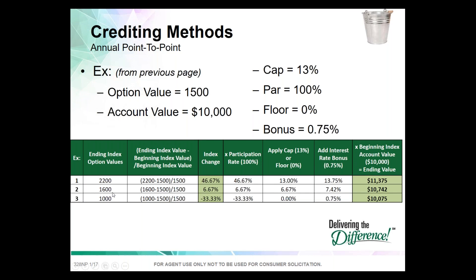In example two, the index starts at 1,500 and moves to 1,600 — up 6.67%. That's within our cap and floor, so that amount is applied to the policy plus any interest rate bonus. In example three, the index goes from 1,500 down to 1,000 — a 33% loss. Applying 100% par rate gives a loss of 33%, but the floor rate says we're not going to credit a negative return: we give 0%. If in the interest rate bonus period, you get a positive 0.75% on North American's Builder IUL in years 11 and beyond.